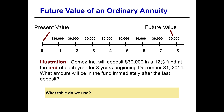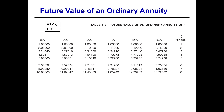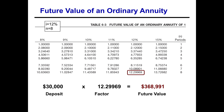Going to our future value of an ordinary annuity tables, the interest rate is 12% and there are eight periods. Finding the 12% column and scrolling down to the eighth period, we find the factor to be 12.29969. Your table may have slightly different decimal places. Taking that factor times the $30,000 deposit — remember, you don't sum all deposits; the factor already incorporates that information — $30,000 times 12.29969 gives us $368,991 at the end of eight years.